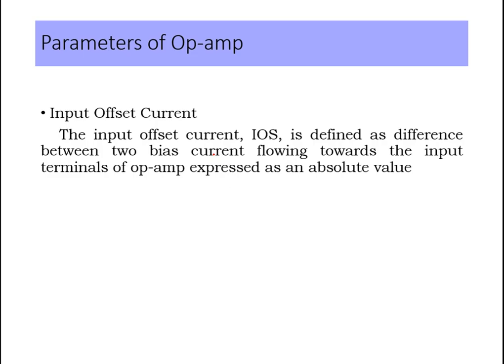Next is input offset current. Input offset current is the difference between the two bias currents flowing towards the input terminals of the op-amp. It is expressed as IB2 minus IB1 — that is, bias current flowing through the non-inverting terminal minus bias current flowing through the inverting terminal.